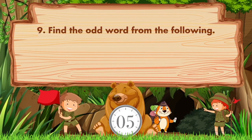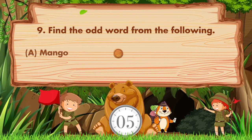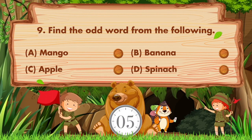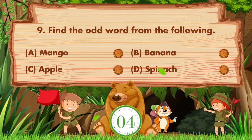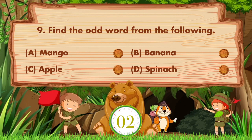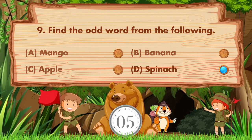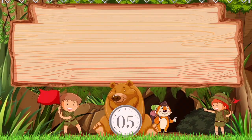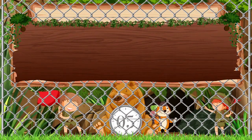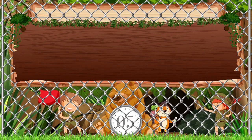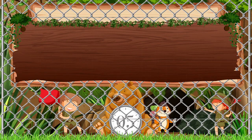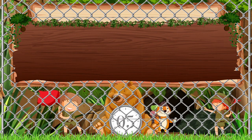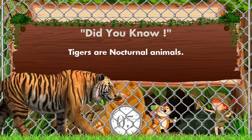Find the odd word from the following. Option A: mango, B: banana, C: apple, D: spinach. Answer is option D, spinach. Yes, you are right!